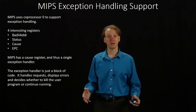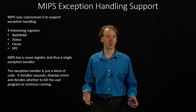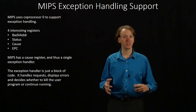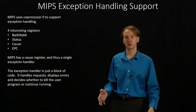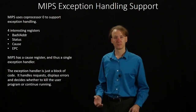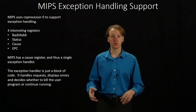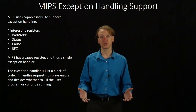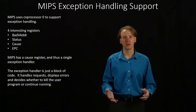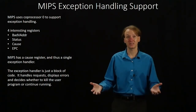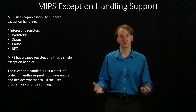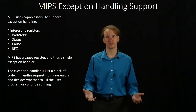So MIPS gives us a handful of registers to work with that we can use to handle any sort of exception that might occur. The way we handle those is just with another block of code — we'll look at the cause of our exception, any relevant data, and make decisions about what we should do in each case.